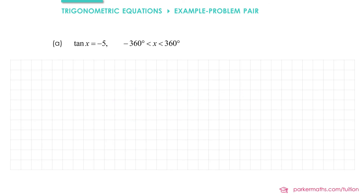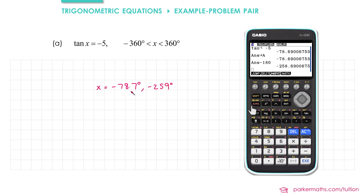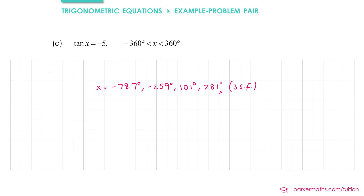In part a we're solving tan x equals negative 5 between negative 360 and 360 degrees. First of all we'll do inverse tan of negative 5, which gives us x equals minus 78.7 degrees to 3 significant figures. From here we use the periodic property to add or subtract multiples of 180. Subtracting 180 gets us to minus 259 degrees; adding 180 to the original gets us to 101 degrees; and adding another 180 to that gives us 281 degrees. So after the first solution we added multiples of 180 to get the remaining three solutions in the stated region.